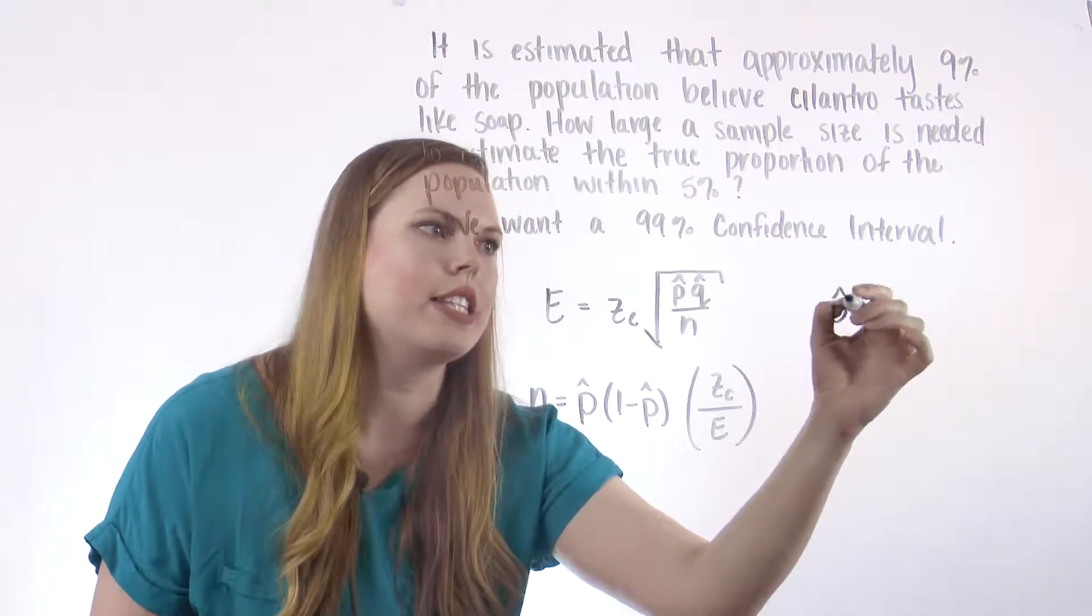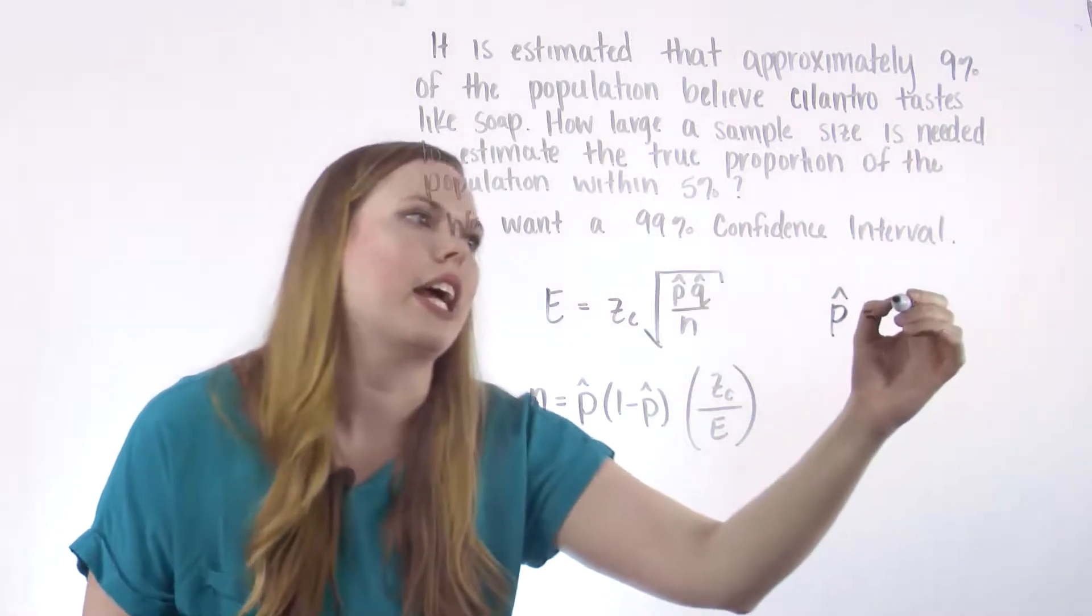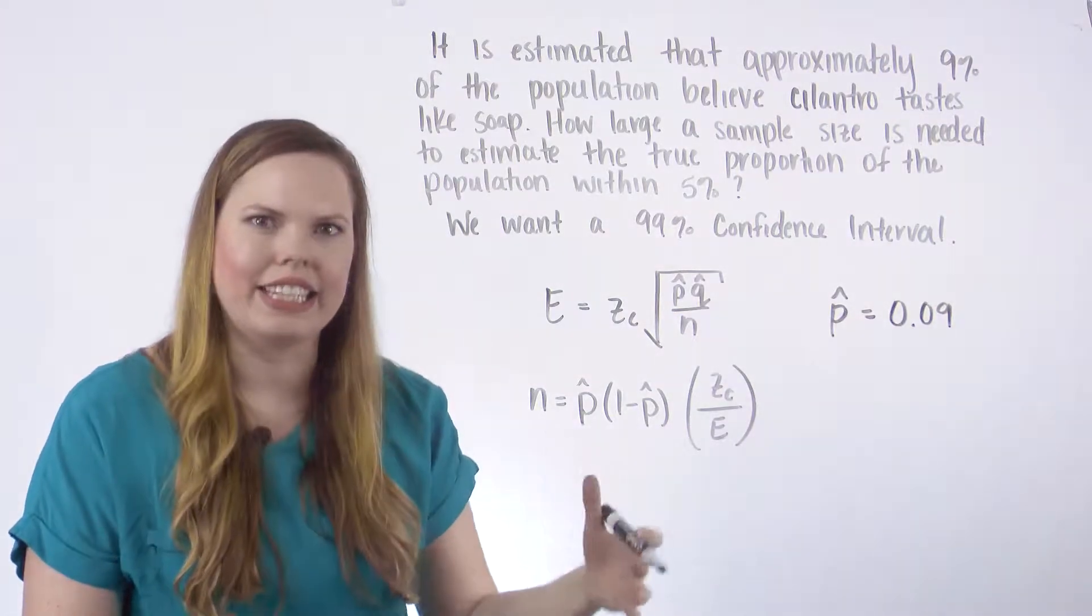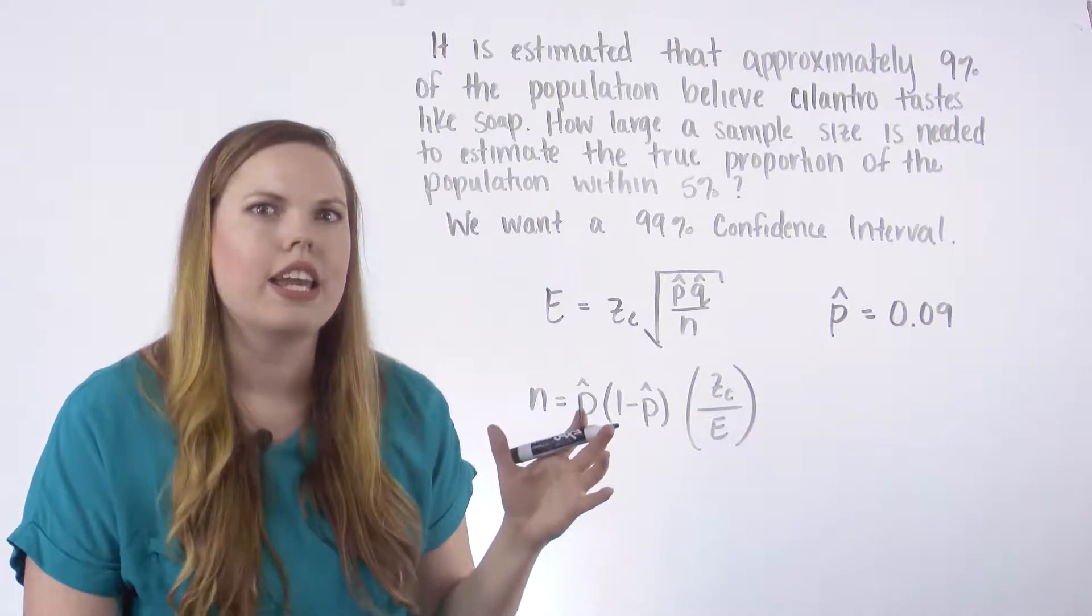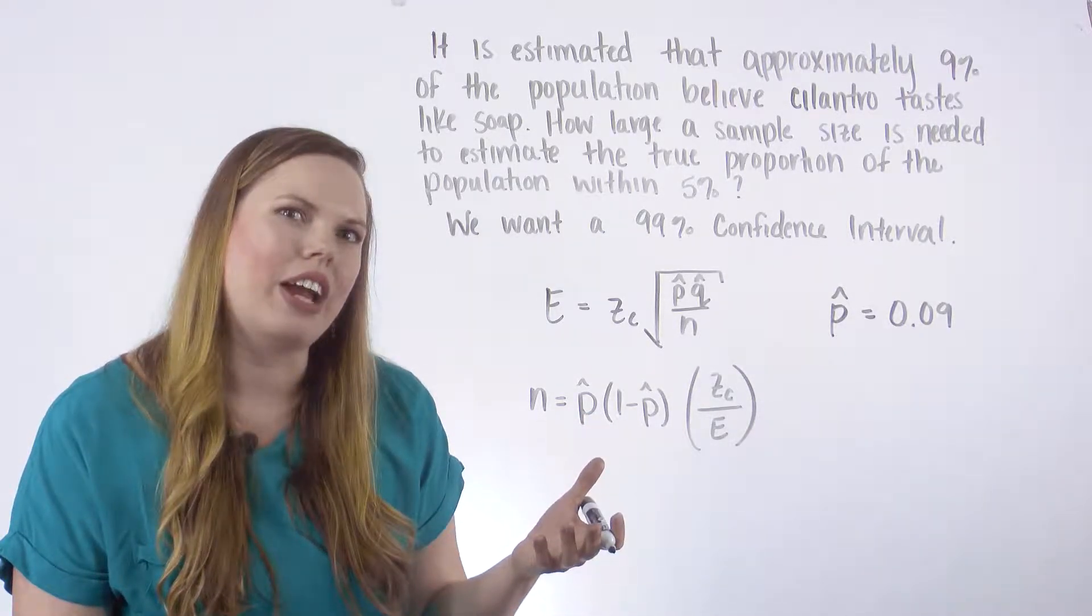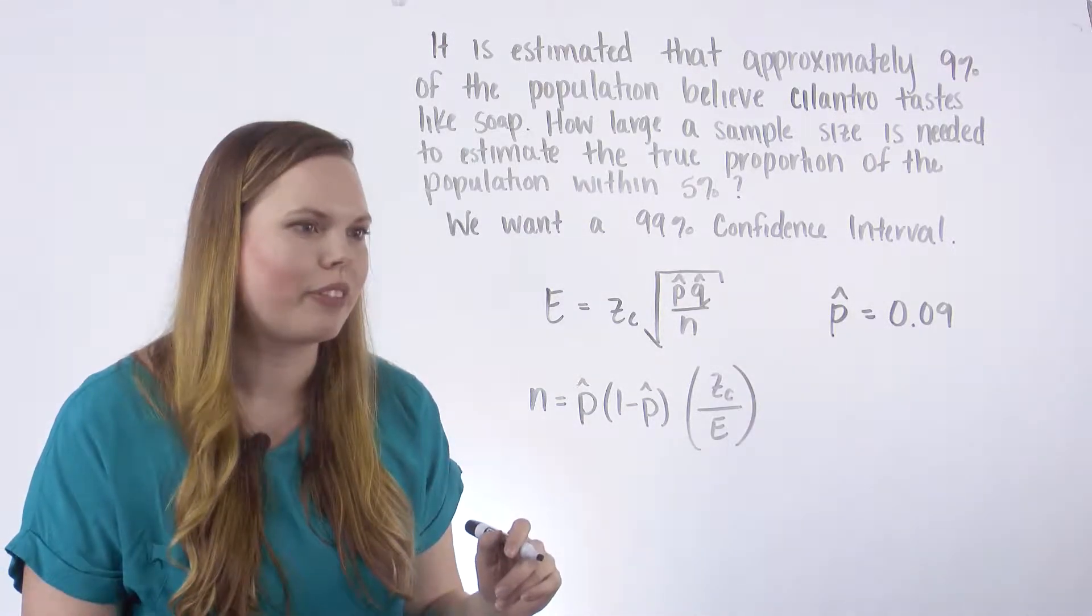p hat here, the estimated p is 9%. We kind of like to have an idea going forward, like this is what we think it is, and then we want to get a better confidence interval around that. We need that to kind of move forward.